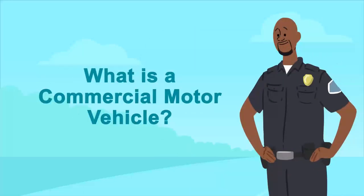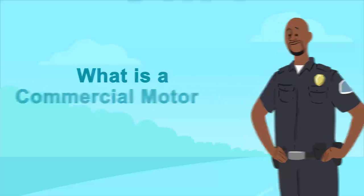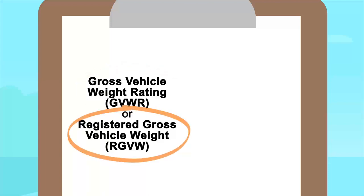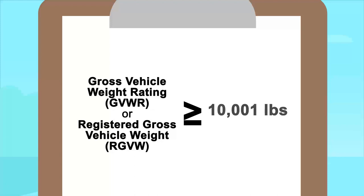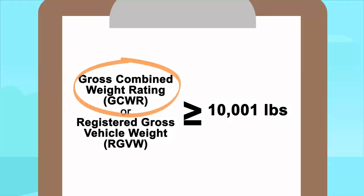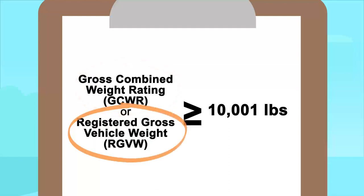What is a commercial motor vehicle? According to the Texas Transportation Code, a CMV is any motor vehicle or towed vehicle with a gross vehicle weight rating (GVWR) or a registered gross vehicle weight (RGVW), whichever is greater, of 10,001 pounds or more, or any combination of vehicles where the gross combined weight rating or the total RGVW of the combination is 10,001 pounds or more.